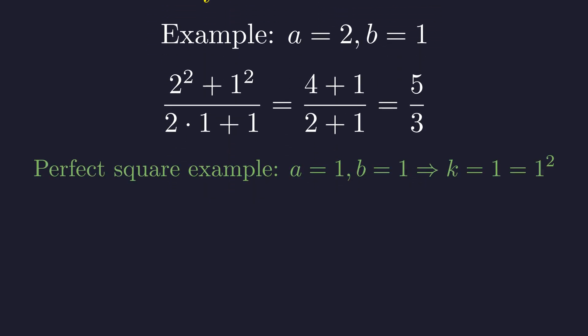But remember from our proof, when a equals b equals 1, we get k equals 1, which is indeed a perfect square.